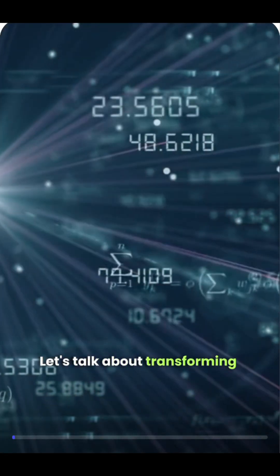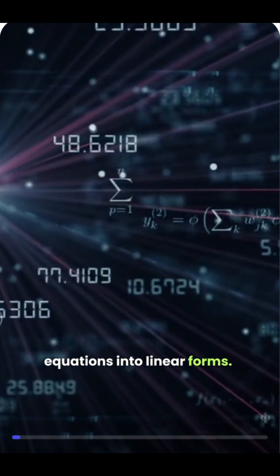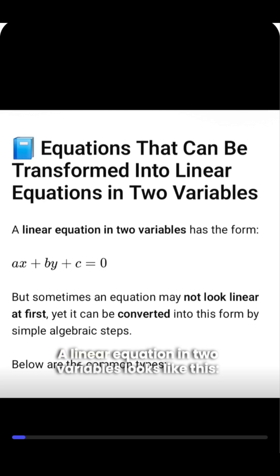Let's talk about transforming equations into linear forms. A linear equation in two variables looks like this: ax plus by plus c equals 0.